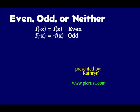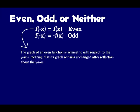Let's determine if a function is even, odd, or neither. In this video, we're really going to talk about determining even, odd, or neither using algebra. But just to review, the graph of an even function is symmetric with respect to the y-axis, meaning that its graph remains unchanged after a reflection about the y-axis. Examples of even functions are the absolute value of x, x squared, x to the fourth, and so on.